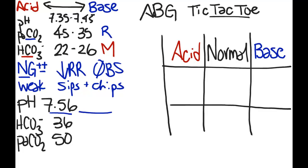The 7.56, because it's over 7.45, is basic and represents alkalosis. Step one, done.